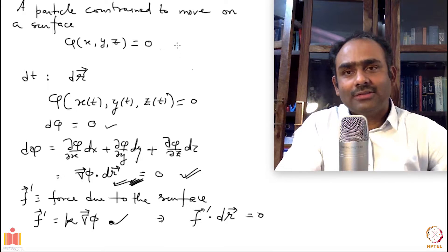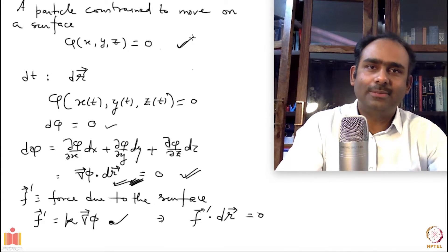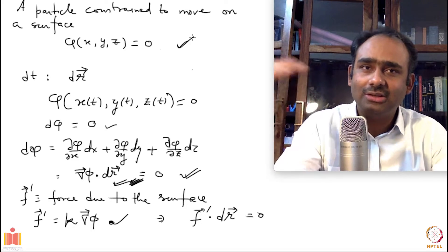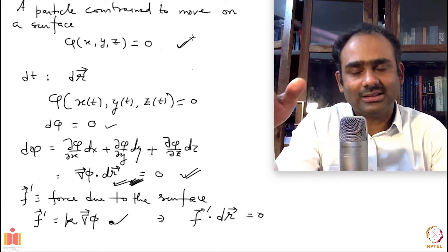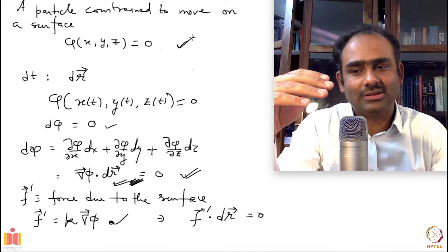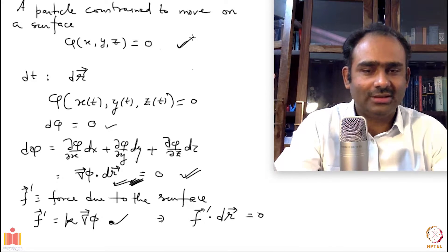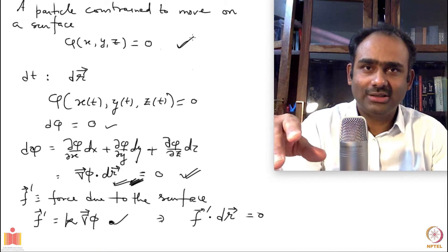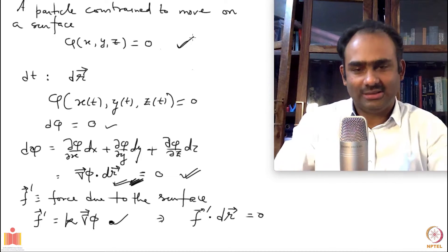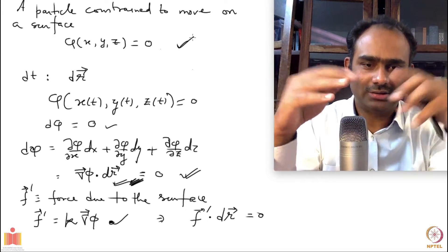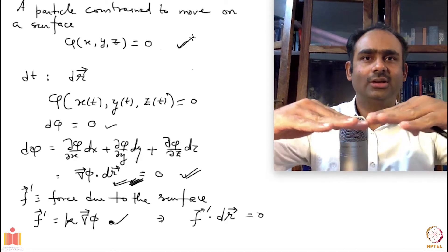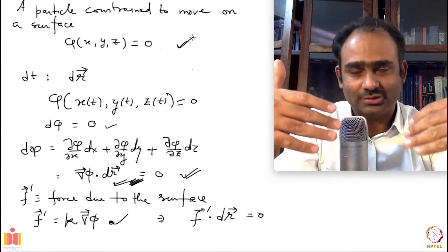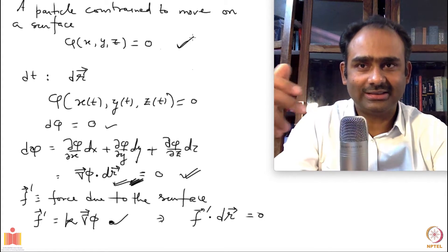Note however that φ here did not involve time explicitly — I was imagining a surface that does not change over time. Let us relax that condition and say the surface is changing with time. For example, imagine a particle sitting on the floor of a lift that is going up with some velocity v. The surface on which the particle is lying is not stationary but moving upward, so there is an explicit time dependence.